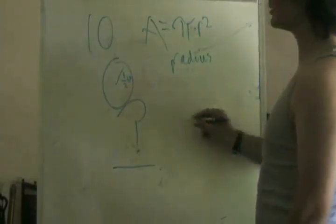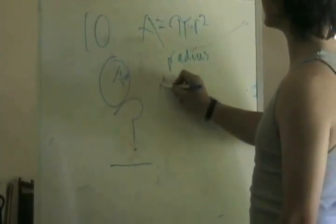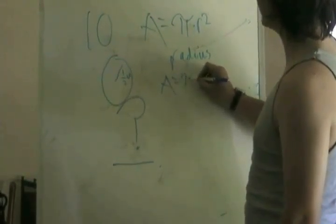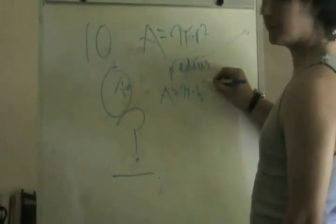So, the radius of this circle is 1 1⁄2 inch. So, our equation now looks like this. Area equals pi times 1 1⁄2 squared.